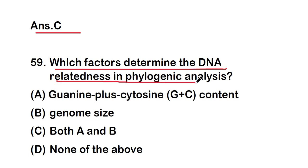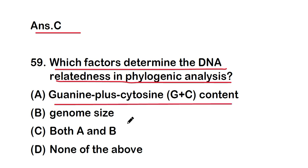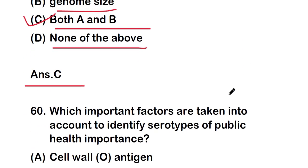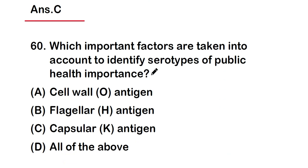Next question: which factors determine DNA relatedness in phylogenetic analysis? Options are: guanine plus cytosine (G+C) content, genome size, both A and B, or none. The right answer is option C — both G+C content and genome size determine DNA relatedness in phylogenetic analysis.